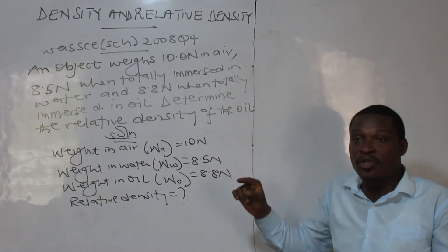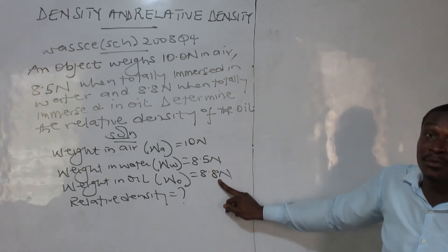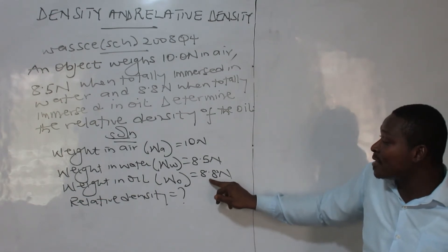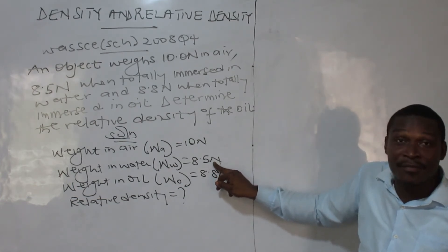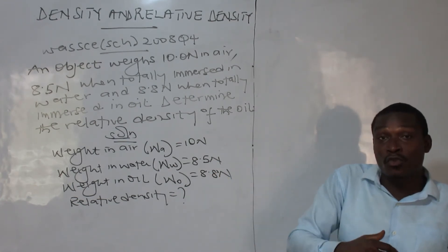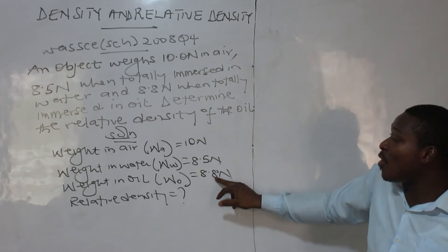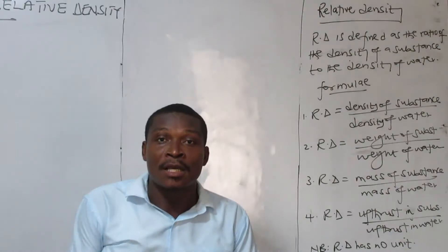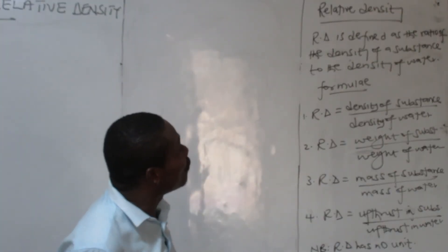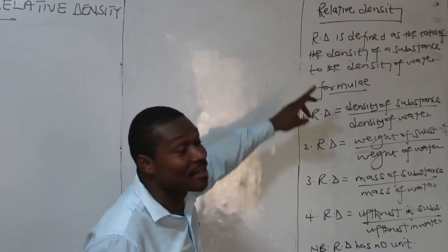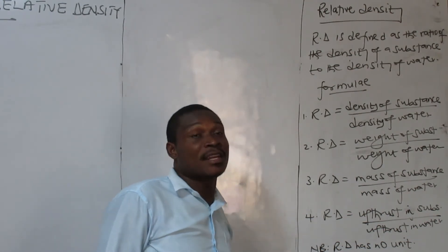So look at this: 8.8 in oil — it tells you oil is denser. That is why its upthrust is less — 8.8 versus 8.5. No wonder when you pour oil it flows slowly; when you pour the same volume of water it flows very fast. It tells you that oil is more viscous and denser than water. Welcome to relative density. Relative density is the ratio of the density of a substance to the density of water. It's a ratio, so it has no units.